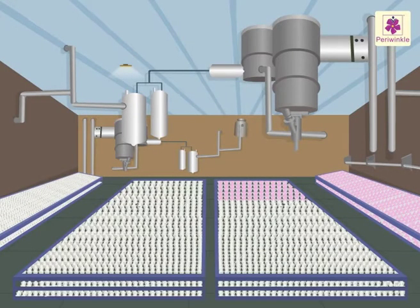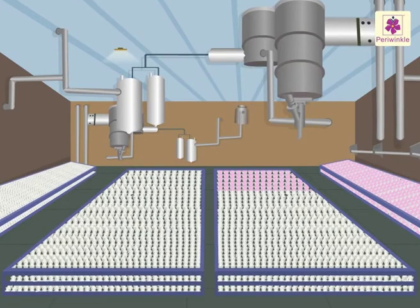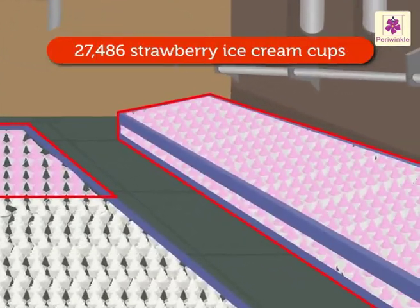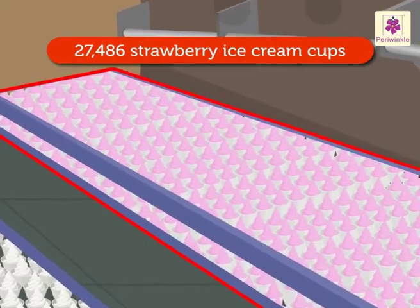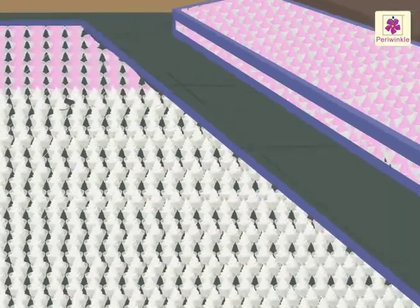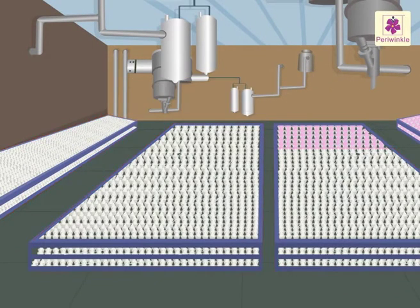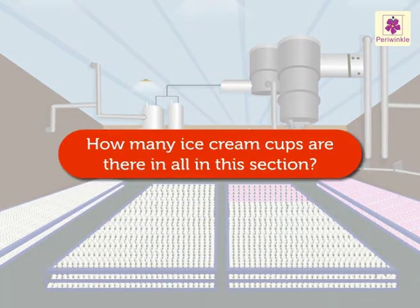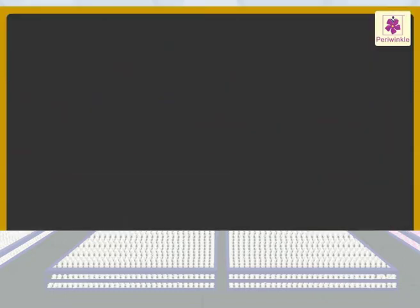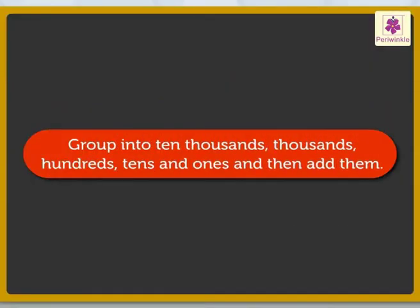Wow, so many ice creams! There are twenty-seven thousand four hundred eighty-six strawberry and forty-five thousand seven hundred sixty-five vanilla ice cream cups. How many ice cream cups are there in all in this section? Let us group them into ten thousands, thousands, hundreds, tens and ones, and then add them.